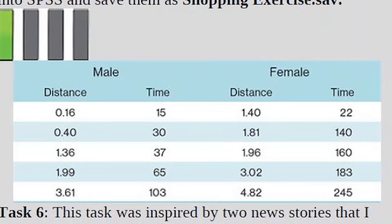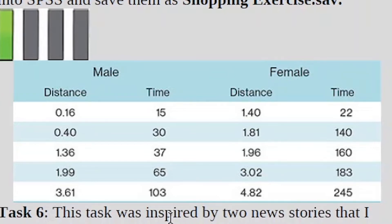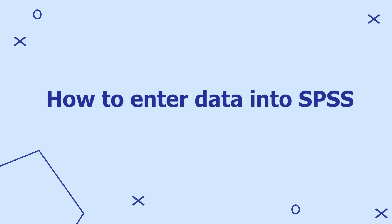This is the data we are going to enter into SPSS. We have male, female, distance, and time. Distance and time refer to distance walked when shopping and time spent when shopping. Male and female are two variables, distance and time are two other variables, so for this question we have three variables to consider when entering data into SPSS.